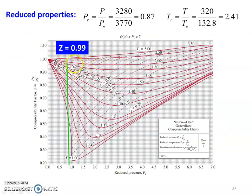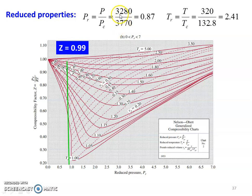Next, using the compressibility chart. This is the compressibility chart with reduced pressure on the x-axis and lines for reduced temperature. From the given data, we calculate the reduced properties: reduced pressure P_R = P divided by P_c = 3,280 divided by 3,770 = 0.87. Critical temperature is 132.8 Kelvin, actual temperature is 320 Kelvin, so reduced temperature T_R = 320 divided by 132.8 = 2.41.